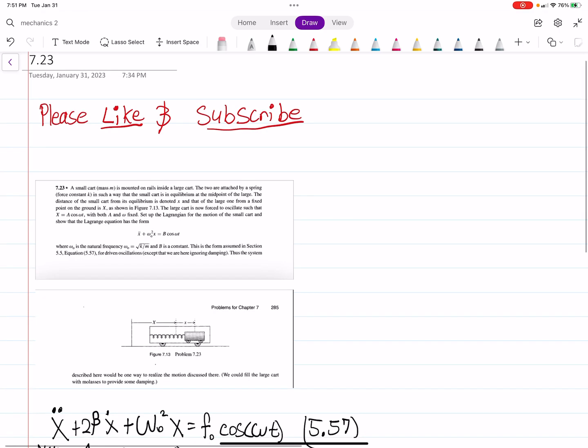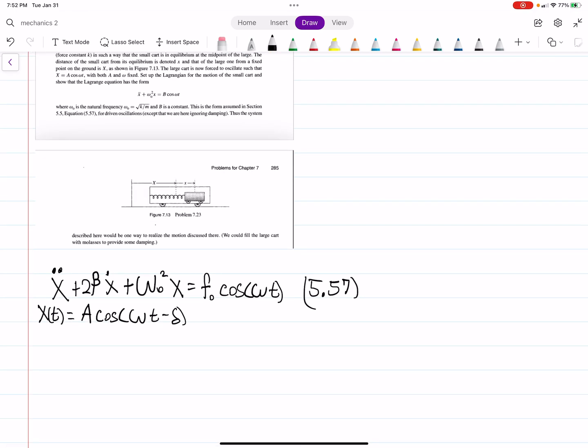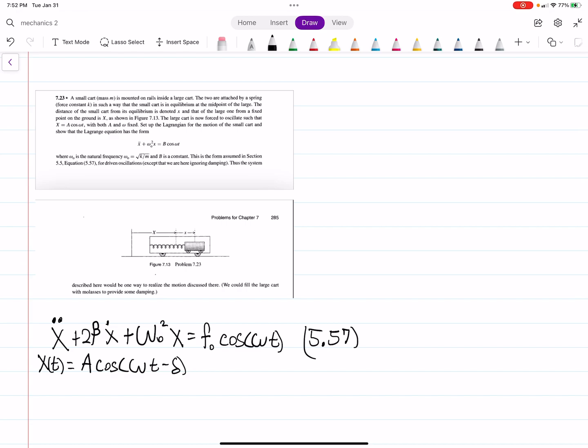So, problem 7.23. You can read it here, but essentially we have a cart inside another cart, and they're attached by a spring. You can see that the positions are denoted big X for the big cart, and little X is the distance from the big cart center of mass to the little cart center of mass. It mentions that the large cart oscillates at X equals A cosine omega T, which also comes from equation 5.57. They're just letting delta be zero.